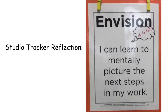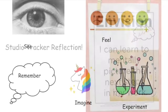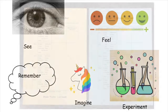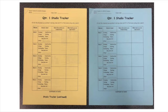We have been learning about where artists get their ideas. This is called Envision. It is a studio habit of mind. Artists create artwork about what they see, feel, remember, imagine, and they even experiment with ideas and materials. Your last group activity center is about a different studio habit of mind.